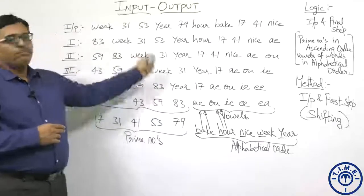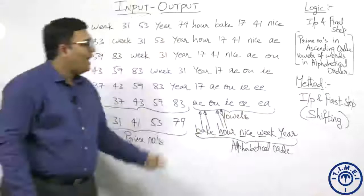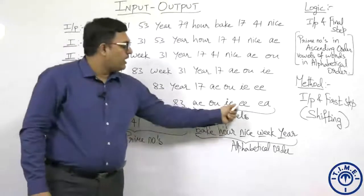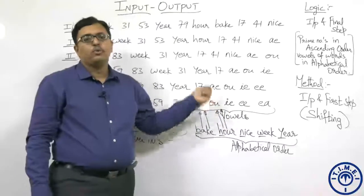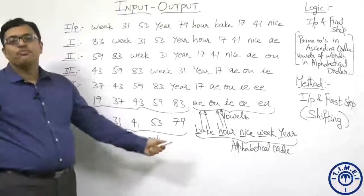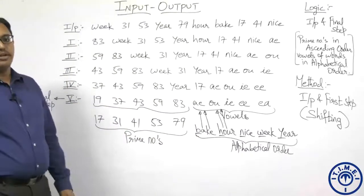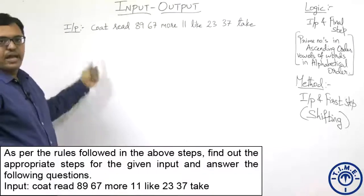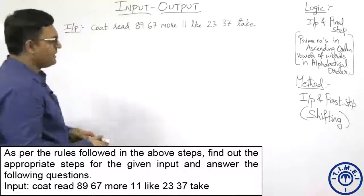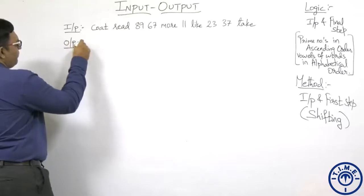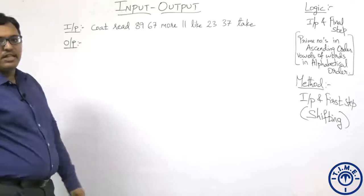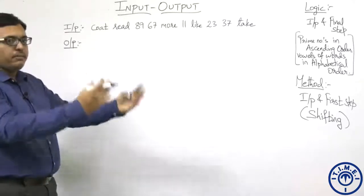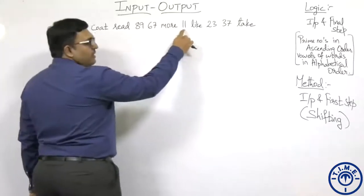Now a similar input is given and we follow the same logic and method. This is a new model since earlier models did not use vowel retention or prime number concepts. This is the new input for the questions. Let us write the output first. The numbers are arranged in ascending order as next prime numbers. Starting with 11 — the least number — after 11 the next prime is 13. After 23, the next prime is 29. After 37, next is 41.